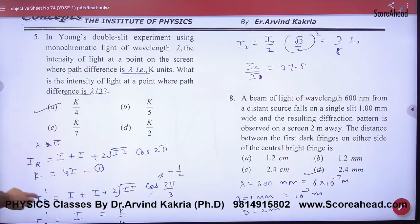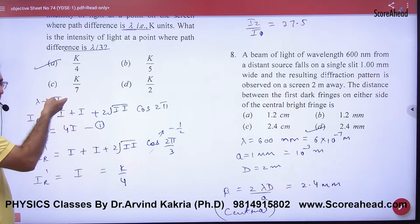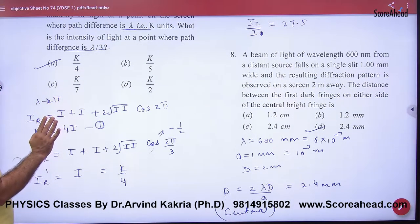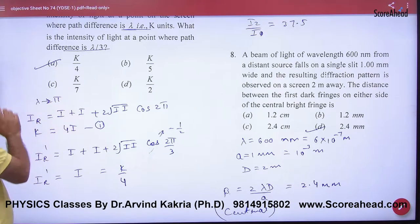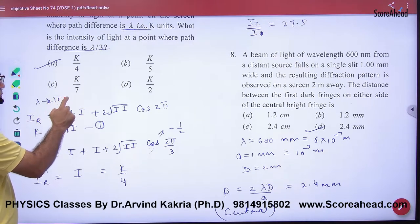Question later on. Path difference is lambda. Phase difference is what? 2pi. What does lambda mean here? 2pi, right?